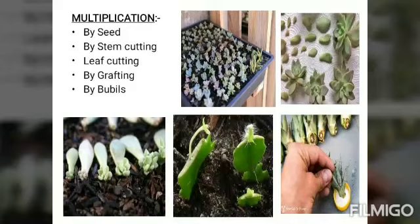The second method is propagation by stem cutting. Many succulents like cacti are propagated by stem cutting. Terminal cuttings are taken from the top portion of the shoot. A clean slanting cut is made just below a node, and the wound is allowed to heal before the cutting is planted for rooting.